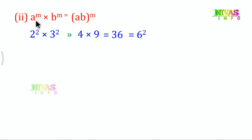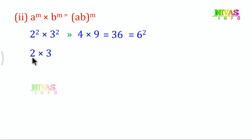Here the exponent is 2 for both. The bases are different. When bases are different but exponents are the same, we multiply the bases together to get a single value with that same exponent. The result is 6^2. This is the second law of exponents.